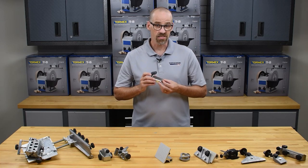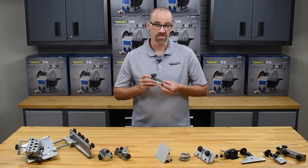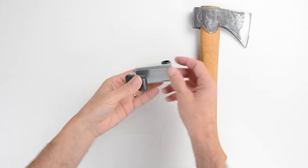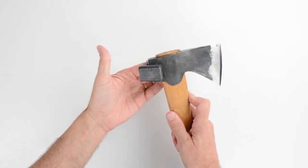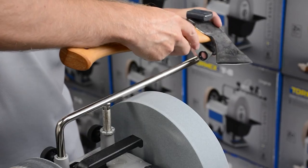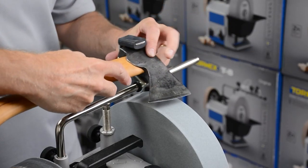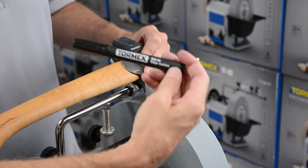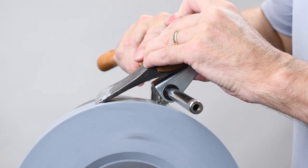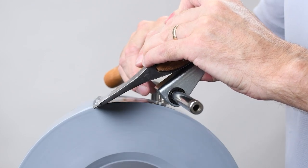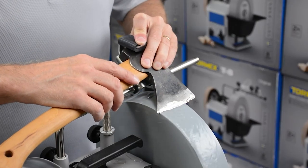The SVA170 axe jig is good for axes and hatchets. The axe jig cradles the axe or hatchet. Use the marker method or the WM200 to set the desired angle. Move the blade evenly across the wheel.